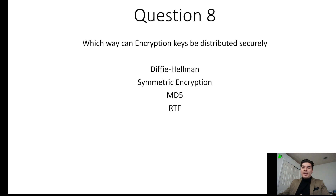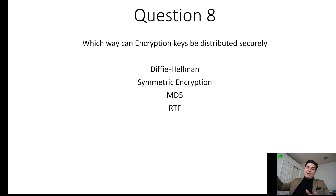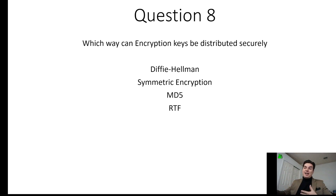Question number eight: which way can encryption keys be distributed securely? The best answer here is Diffie-Hellman. Diffie-Hellman uses an asymmetric formula to establish symmetric encryption. Initially when logging on to an online website for the first time, it uses asymmetric encryption and then tries to establish symmetric encryption, which is better for bulk transfer of data. MD stands for message digest, which is for hashing.